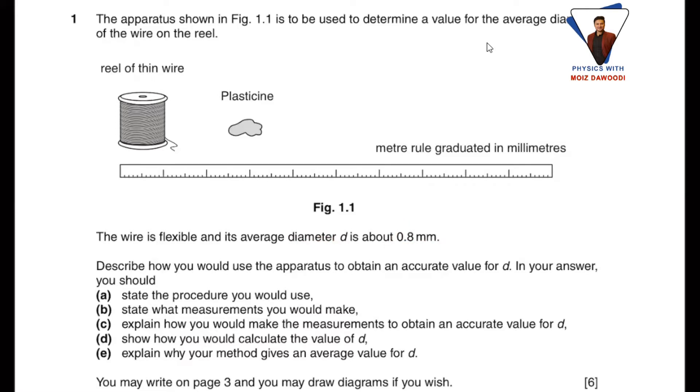Describe how you would use the apparatus to obtain the accurate value for d, that is diameter. In your answer you should include parts a, b, c, d, e—five steps through which the examiner is asking the question. So let us first observe the procedure through the video.